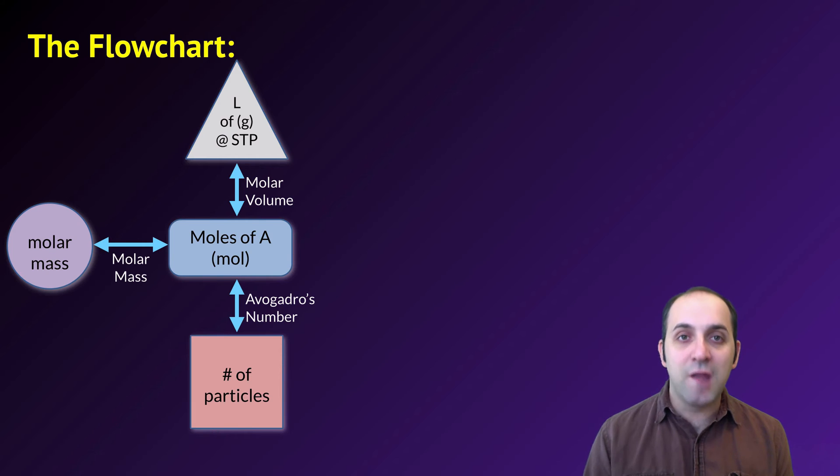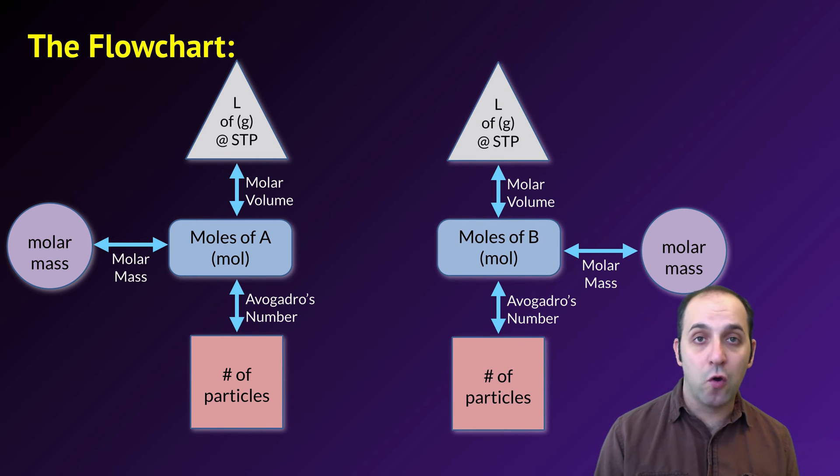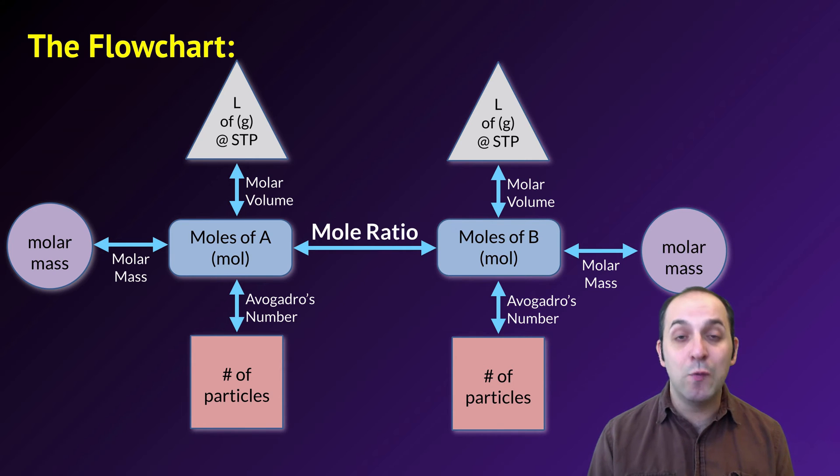Here's the flow chart that we'll use for this. If we have some substance A, we can go between its three molar quantities without a problem. And we have some substance B, we can also go between its three molar quantities without a problem. But in order to compare between A and B, we need to use the balanced mole ratio from the equation.